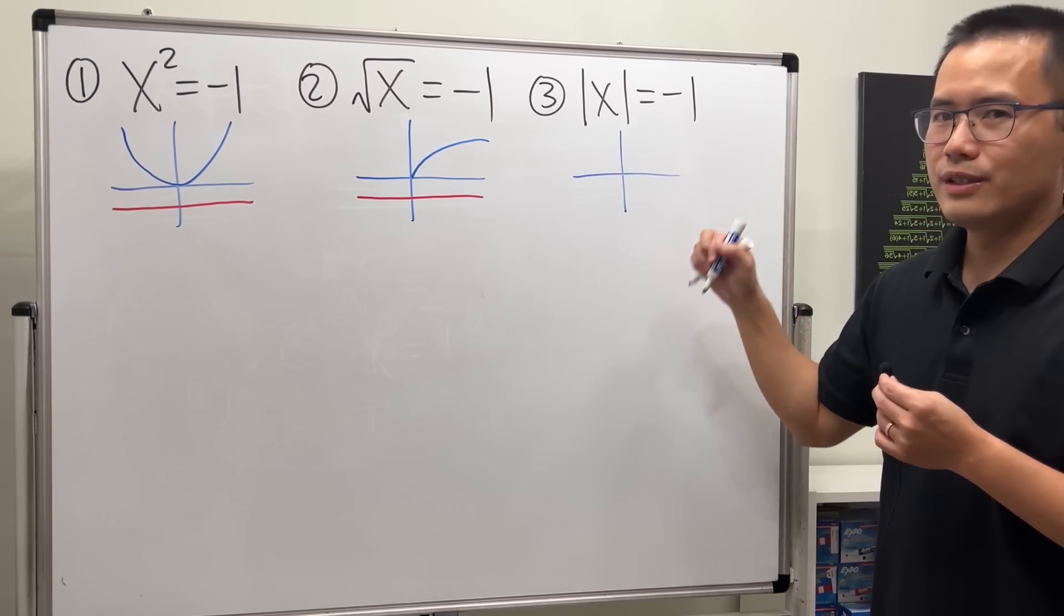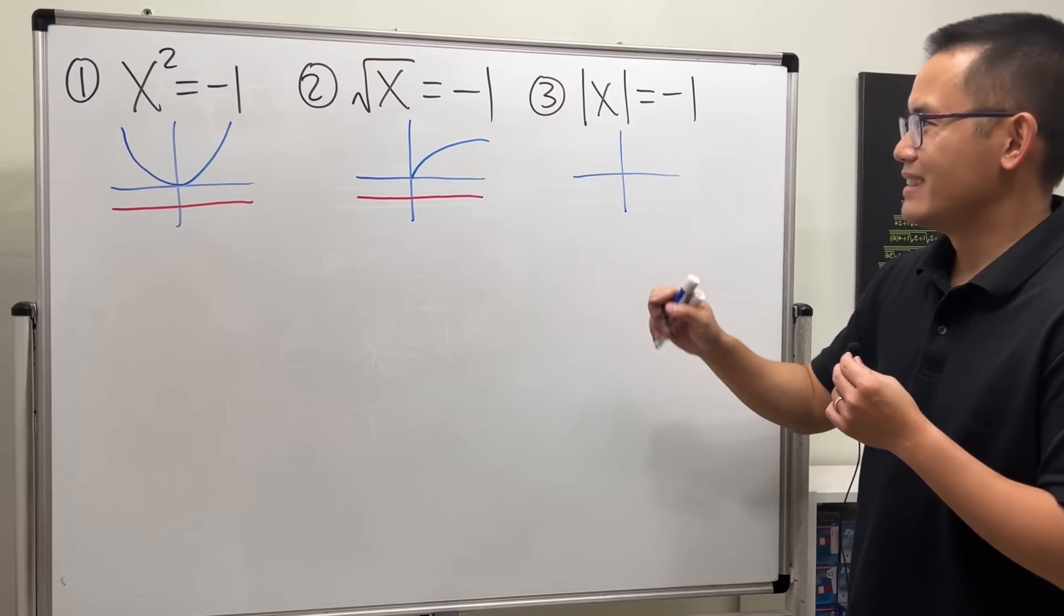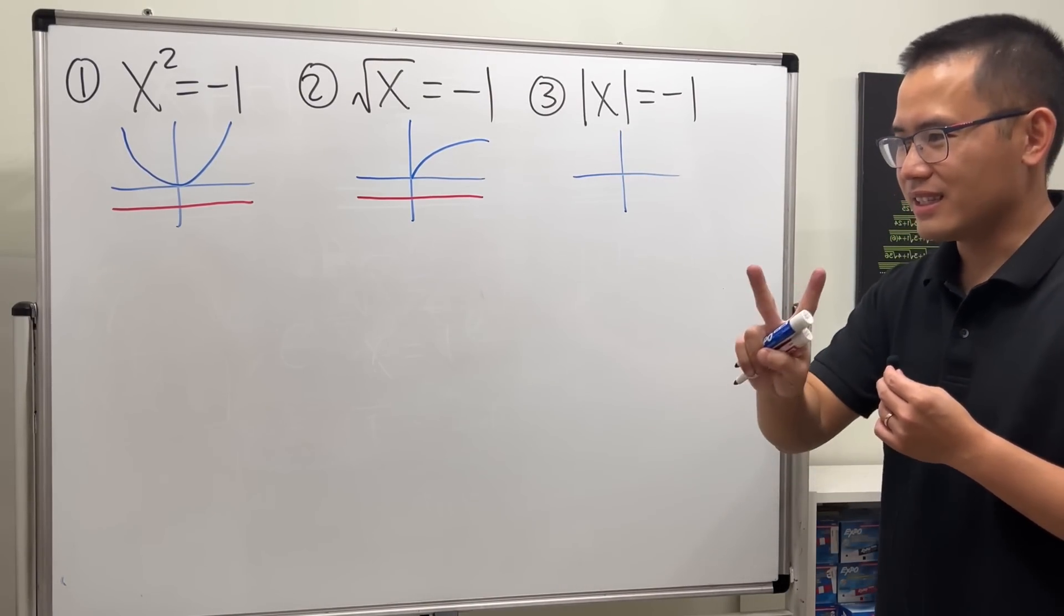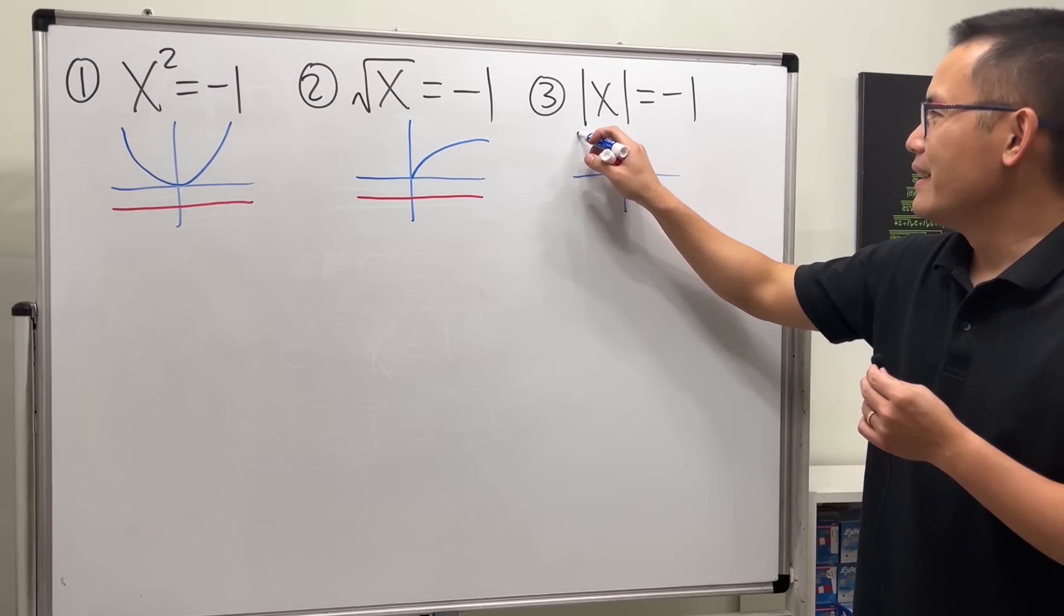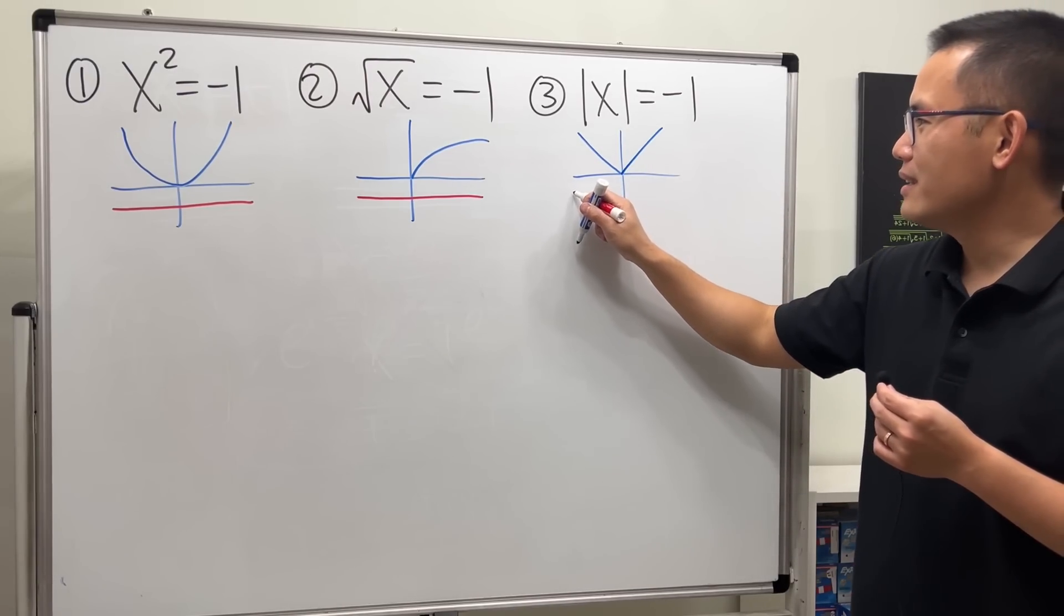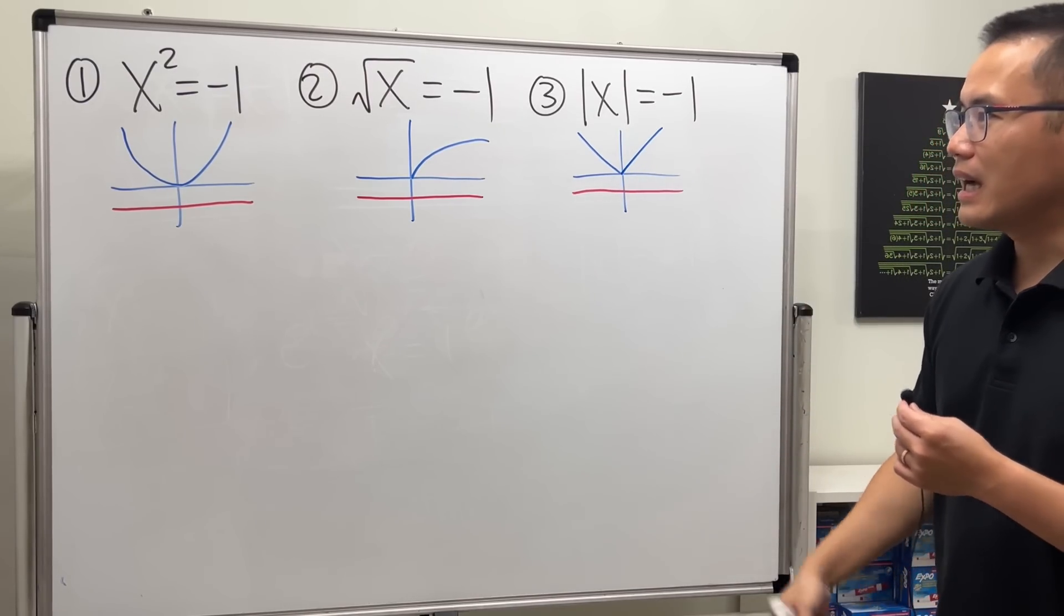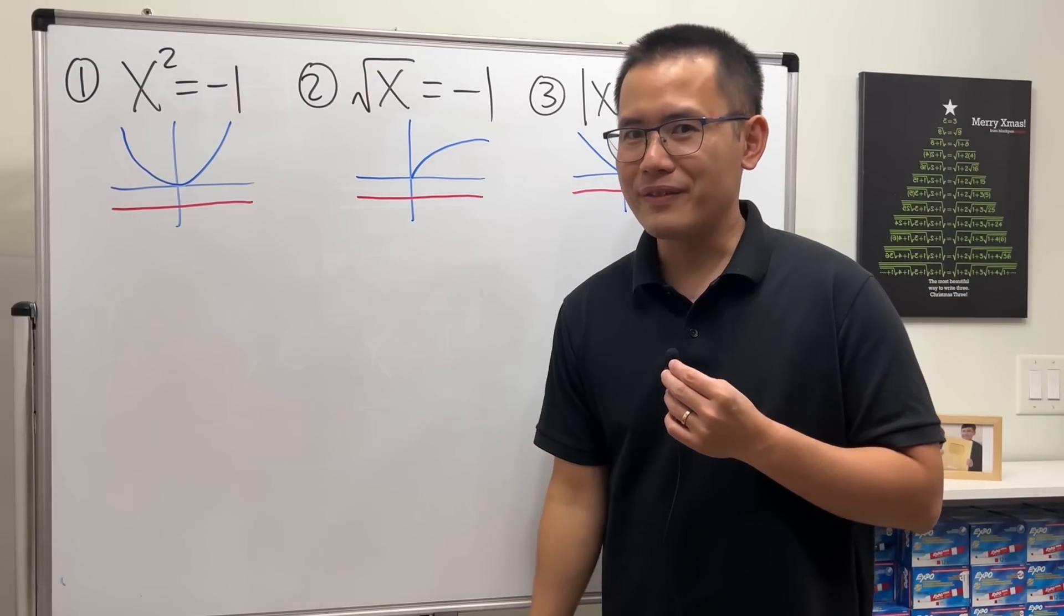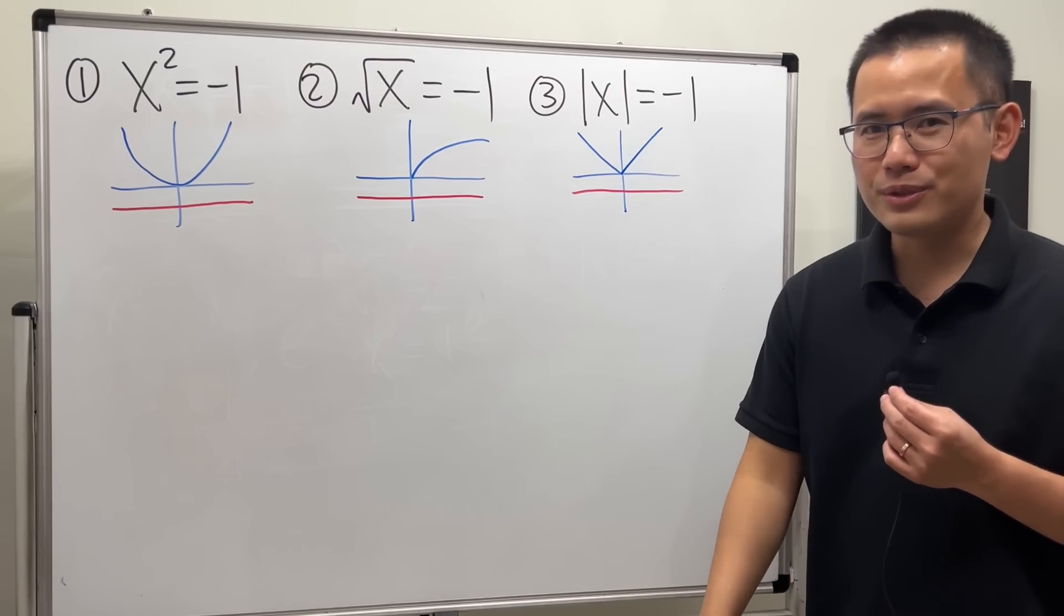And now for the last one, absolute value of x, which looks like a V. I like the absolute value x a lot - you can do this every time you have a V. And again, negative one is somewhere down here, so because the graphs do not cross the negative one, that means they have no solutions.